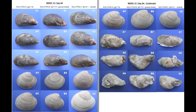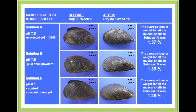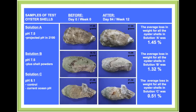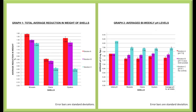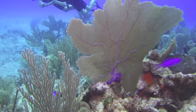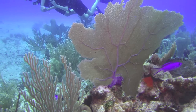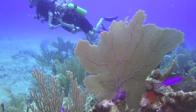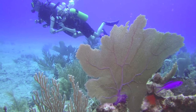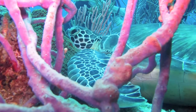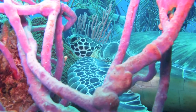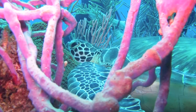My results showed that the addition of the shell powder to the acidified seawater not only slowed down the degradation of the shells, but it also helped to stabilize the pH levels over time. Even though buffering an entire ocean isn't feasible, it might be possible to create protected marine areas to help mitigate local impacts of ocean acidification and ensure the survival of our most threatened marine organisms.